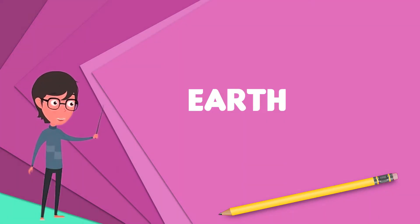Earth is the third planet from the Sun and the only astronomical object known to harbor life. According to radiometric dating and other sources of evidence, Earth formed over 4.5 billion years ago.